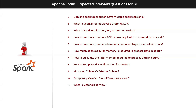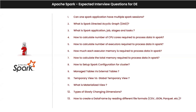What is a materialized view — we recently covered that. Types of slowly changing dimensions — six types total, we covered one or two very important ones. How to create a DataFrame by reading different file formats — CSV, JSON, Parquet — covered. How to create a DataFrame from a Hive table or any table — it's very simple, we covered that. This is the second set of interview questions.